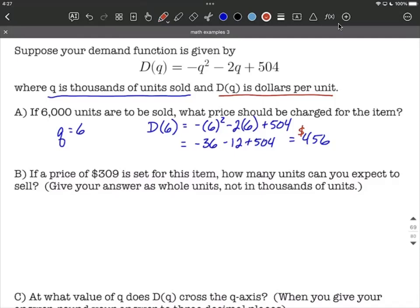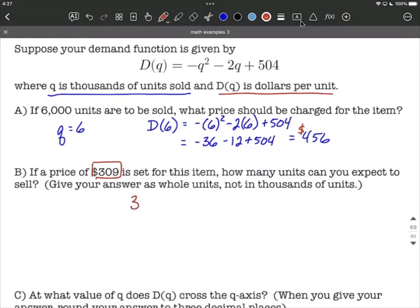On part B, we want to know if a price of $309 is set for this item, how many units can you expect to sell? So what we want to do is first identify we have 309 as our value given to us. That's in dollars, so that's a value for D(q). So I'm going to replace D(q) in our original function with 309, and it's going to equal negative q squared minus 2q plus 504.